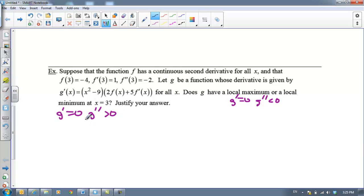Let's see what happens. First of all, what is G prime at three? I'm going to plug in three for all of these X's and I'm going to get nine minus nine. I'm just going to stop right there because that's zero times everything else. That's definitely going to be zero. So we know that three is at least a critical point for G.